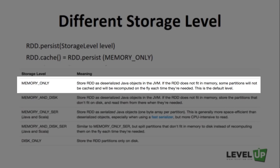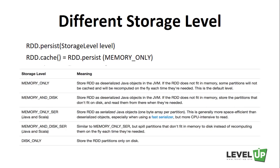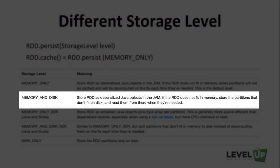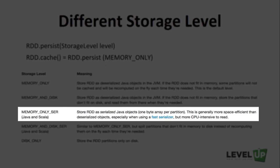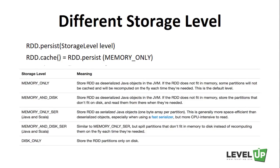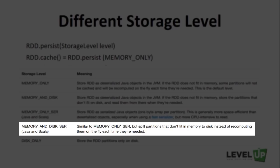Memory-only is the default level. There are other storage levels as well. Memory-and-disk stores the RDD as deserialized Java objects in memory; if it can't fit, partitions are stored on disk and read from disk when needed. Memory-only-ser is similar to memory-only but stores the RDD as serialized Java objects in memory — more space-efficient, especially with a fast serializer, but more CPU-intensive to read. Memory-and-disk-ser is similar to memory-only-ser, but saves partitions that can't fit into memory to disk instead of recomputing them on the fly each time they're needed.